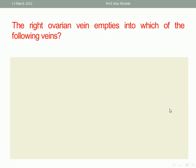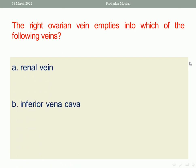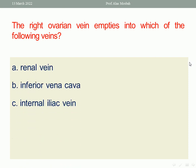Let us go to the next question. The right ovarian vein empties into which of the following veins? Don't think this is a repeated question — it is not, because the left is different than the right ovarian vein. The choices are: renal vein, inferior vena cava, internal iliac vein, external iliac vein. Right ovarian vein empties into inferior vena cava.